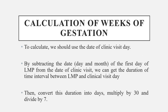Now we will see how to calculate week of gestation. First, we take the clinical visit date. Then we take the first day of the last menstrual period (LMP). We subtract LMP from the clinical visit date to get the duration, then multiply the days and divide by 7 to get weeks.